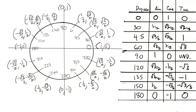Filling in for the first two quadrants: the sine of 0 degrees is 0, the sine of 30 degrees is 1/2, the sine of 45 degrees is √2 over 2, the sine of 60 degrees is √3 over 2, and the sine of 90 degrees is 1.